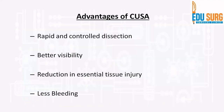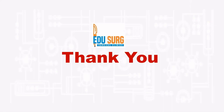The advantages of CUSA include controlled dissection and better visibility due to the selectiveness of tissue division and fragmentation. There is reduction in essential tissue injury because CUSA selectively damages only tissue with high water content, resulting in less bleeding. It is used in liver surgery, neurosurgery, and many other areas. This video will help you understand how CUSA works, and with this understanding you can use it in a better way. In upcoming energy sources videos, we will study more fascinating energy sources used in surgery. Thank you.